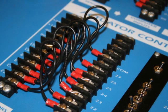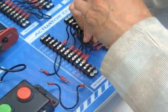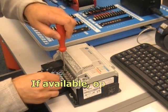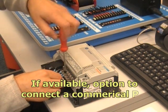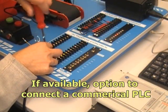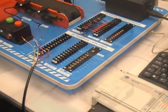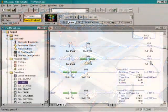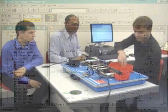The wiring system panel on the production line trainer allows the computer connections to be disconnected. If available, any commercial PLC unit can then be wired to the production line. Programs developed for the commercial unit now take control of the system. This enables the hardware to be used as an application for teaching industrial PLCs to students at a higher level.